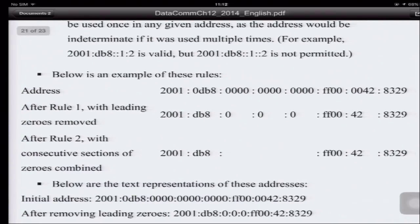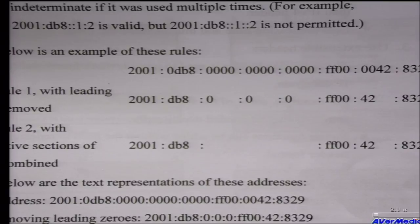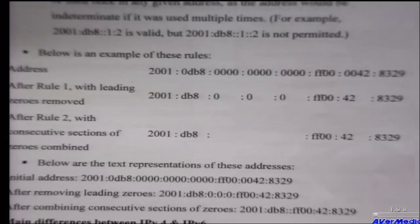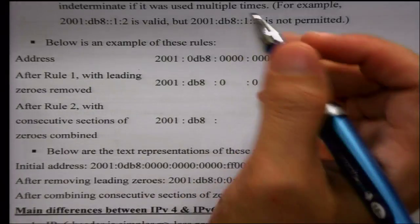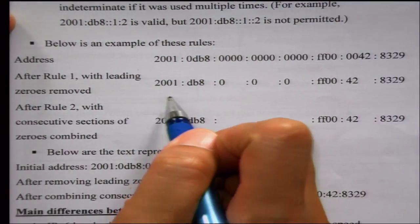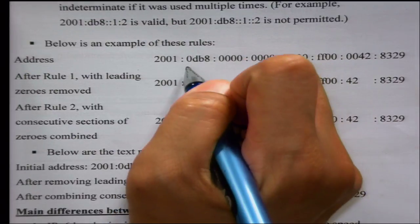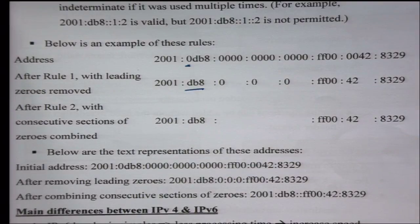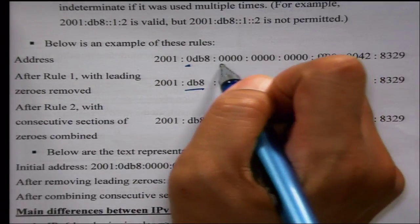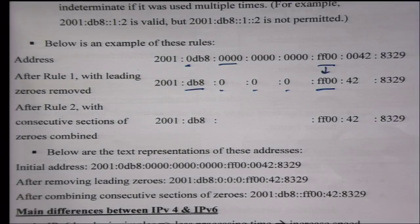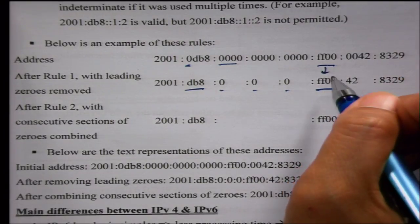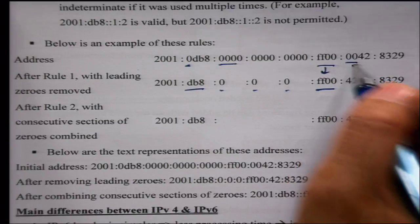Here is an example of applying these rules. You have a full address, and after the first group, you delete the leading zeros to get DB8. Then you delete the leading zeros from the next group to get 0000. Then for a group like 0042, you delete the leading zeros in front to get just 42.